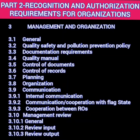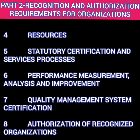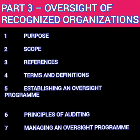Under the management and organization section, this part further talks about the resources and infrastructure required, statutory certification and services, processes, performance measurement, analysis and improvement, quality management system certification, and the authorization of recognized organizations. And finally, part three overall talks about the criteria against which the recognized organizations are assessed, authorized, and recognized, giving guidance for subsequent monitoring of ROs by the administration.